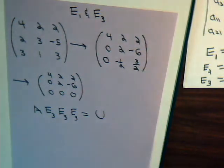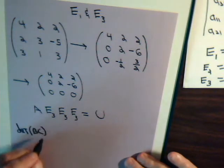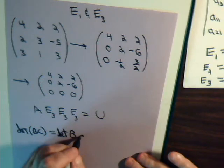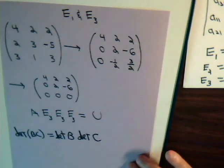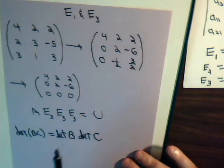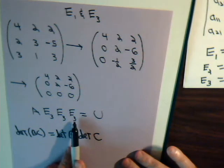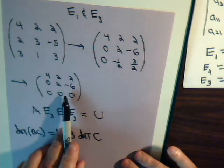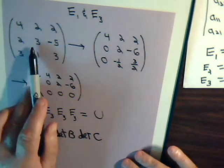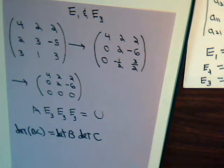We took our matrix and multiplied it by three elementary matrices to get this upper triangular matrix. We said in the previous video that the determinant of a product of matrices equals the product of their determinants. So the determinant of U equals the determinant of all of these. The type-three elementary matrices each have determinant one, so the determinant of U equals the determinant of A. This upper triangular matrix has determinant zero because it has a row consisting of all zeros.